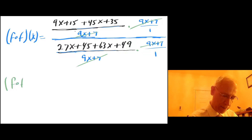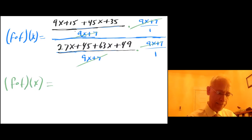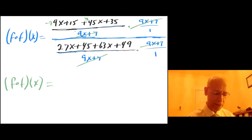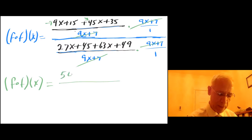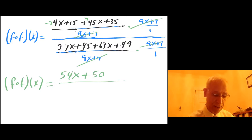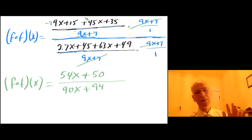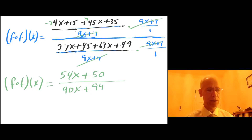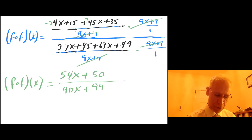So f of f of x equals: on top, 9x plus 45x gives 54x, and 15 plus 35 gives 50. In the denominator, 27x plus 63x gives 90x, and 45 plus 49 gives 94. In math 141, it is expected for us to factor and simplify at every step we can, so let me factor a 2 out of both numerator and denominator.